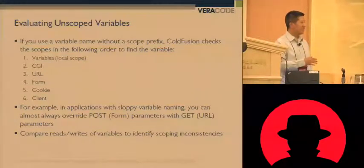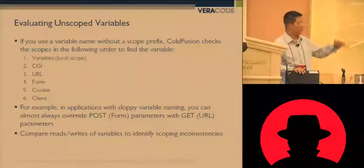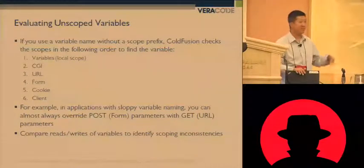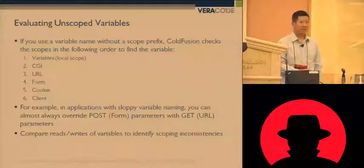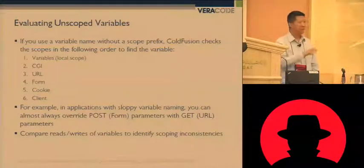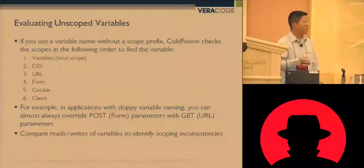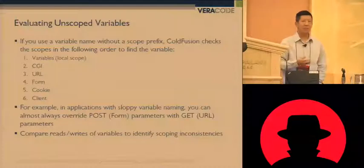There are actually twelve scopes that it searches through. The most relevant ones are shown here in proper relative order. CGI, URL, form, cookie, client — those are the ones that are most often tainted. A side effect of this search order is that if you have an application that doesn't specifically use scoping, you can almost always override form parameters with GET parameters, because the search order looks at the GET parameter first — URL is number three, form is number four.